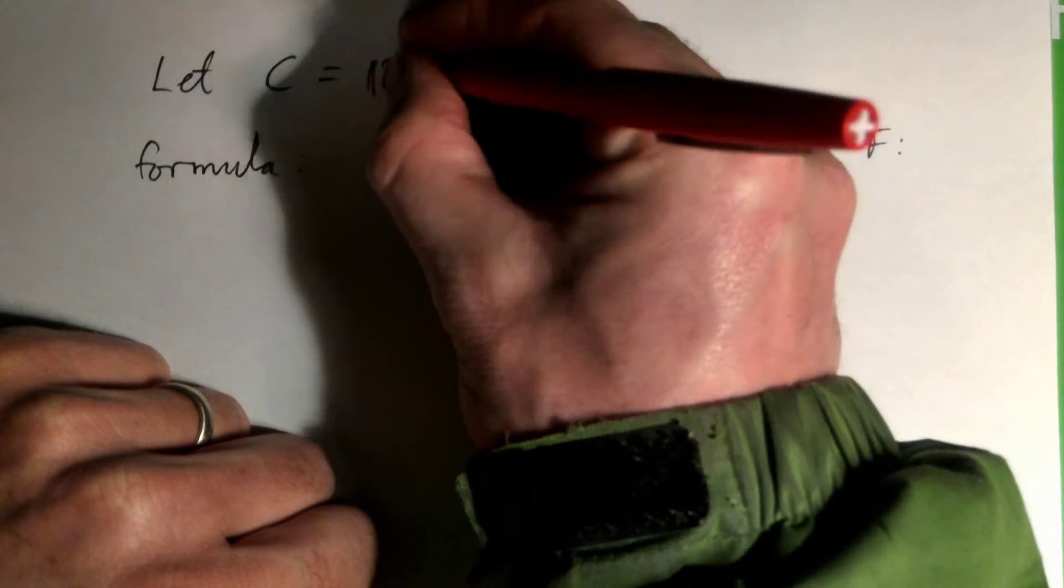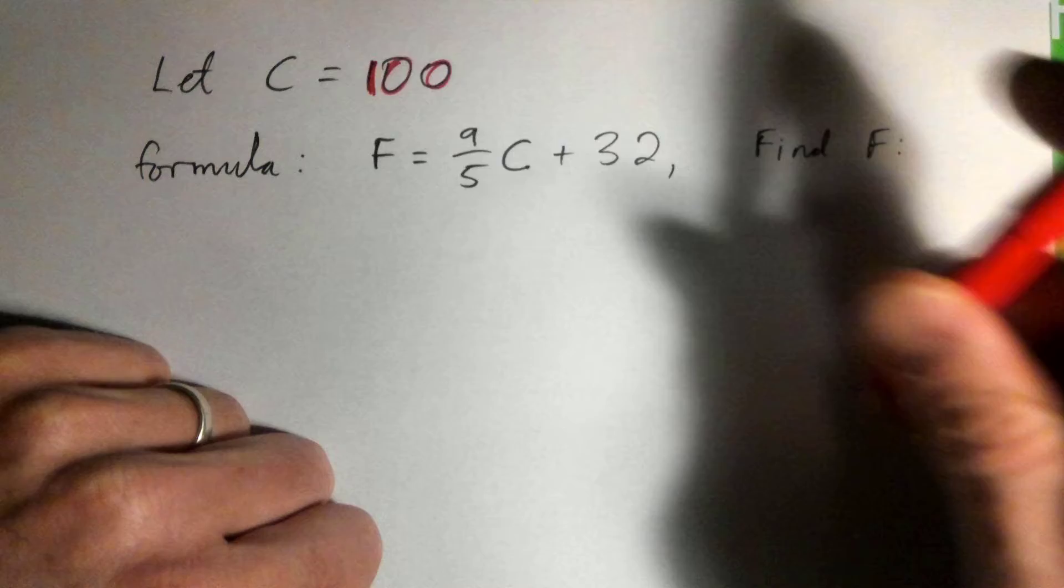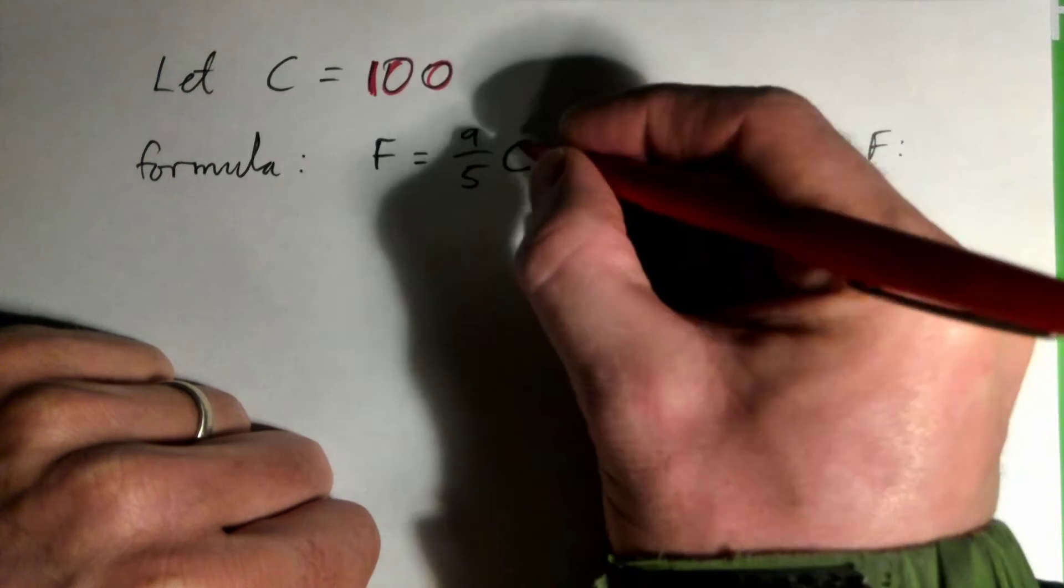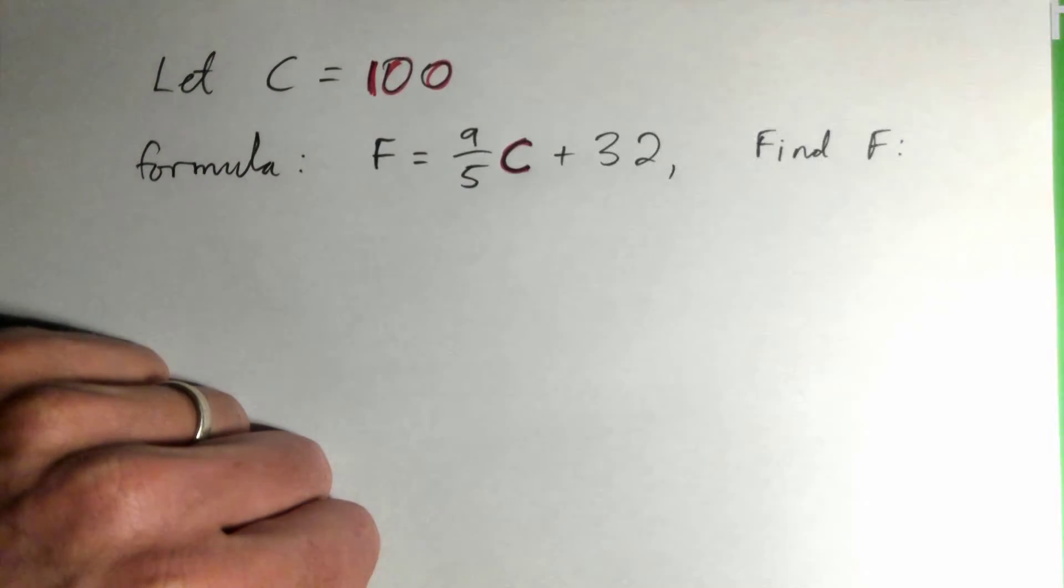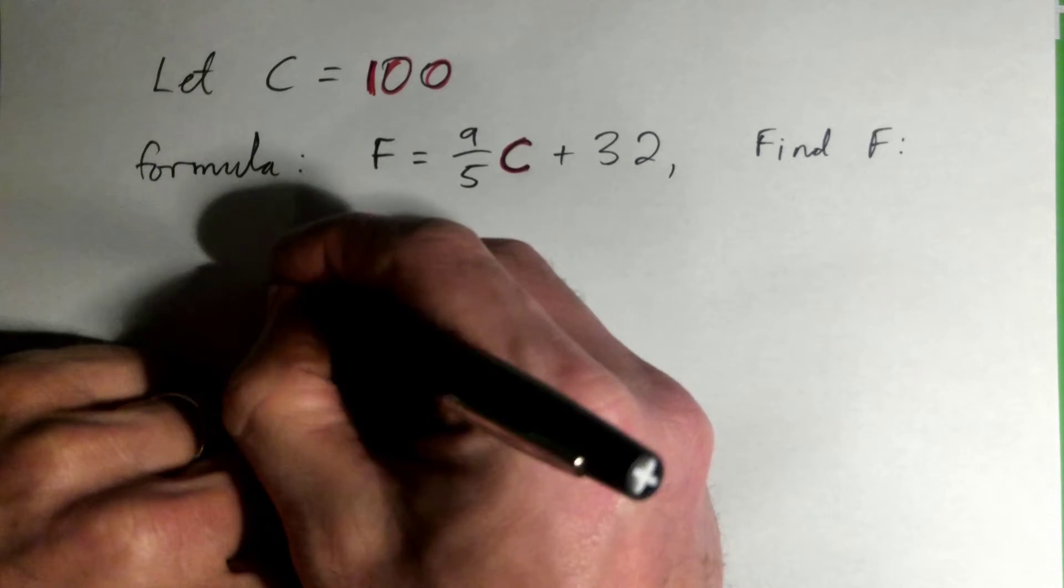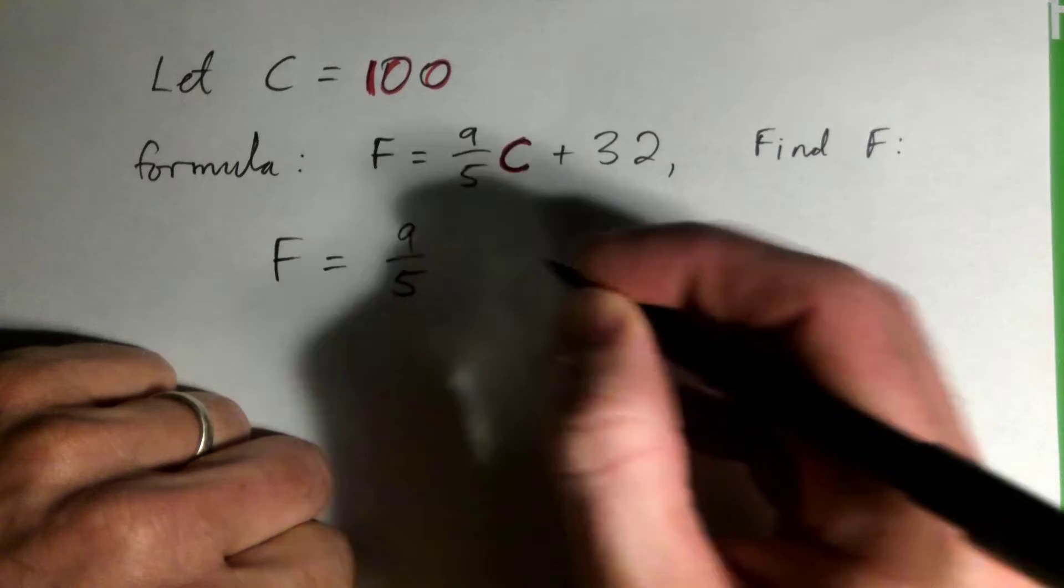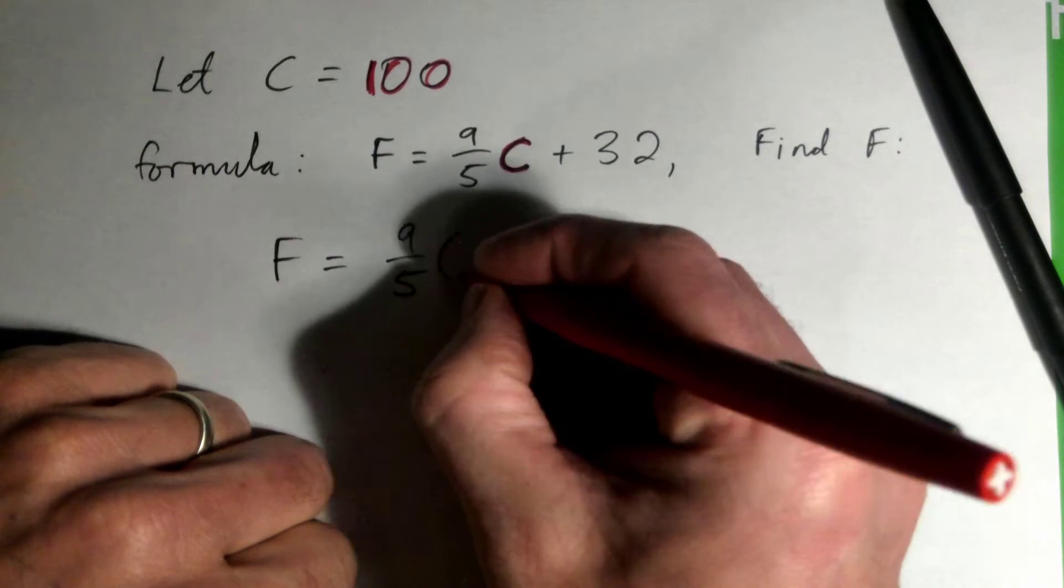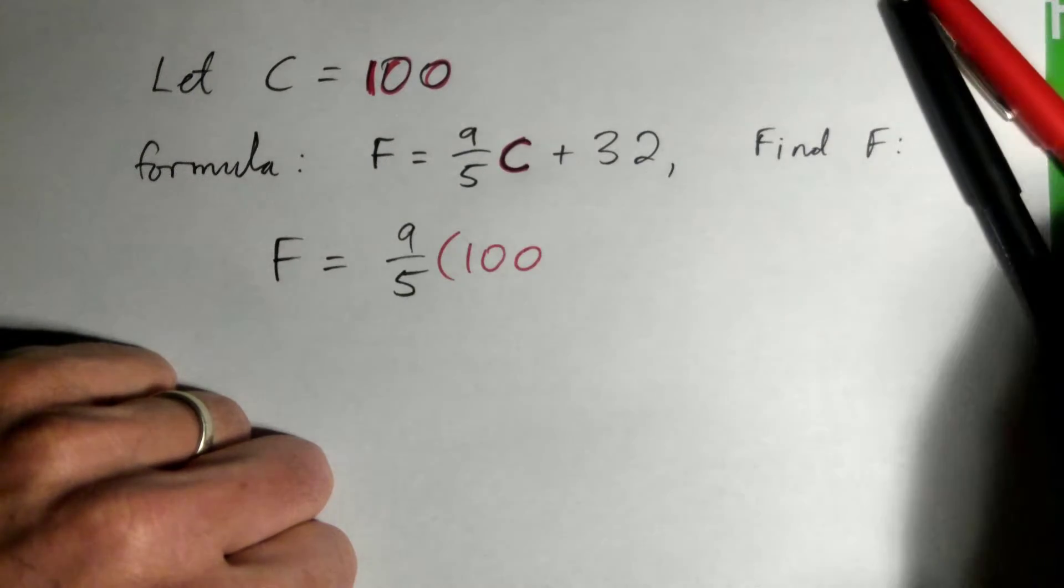Anyway, C equals 100. So what we're going to do is take this hundred and plug it in for C in the formula. Does that make sense? So we'll have F equals nine over five times 100. So we've just taken a hundred and plugged it in for C.